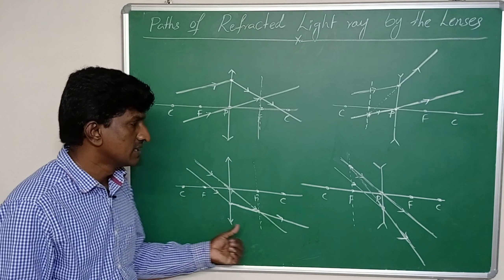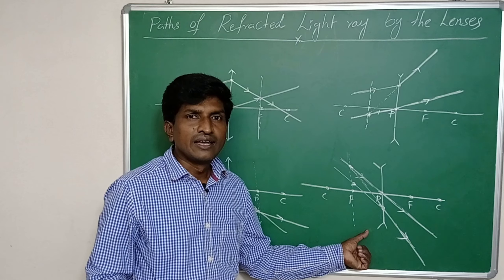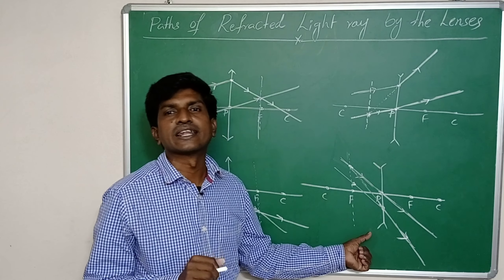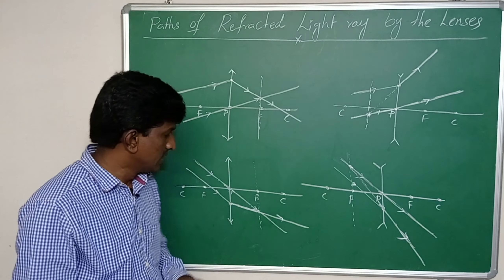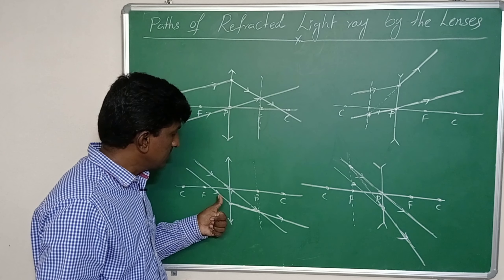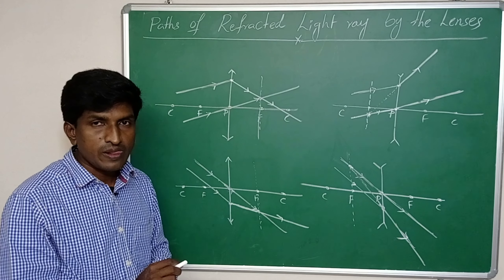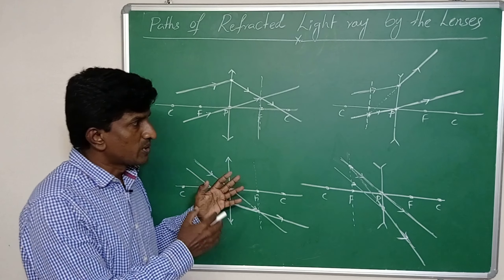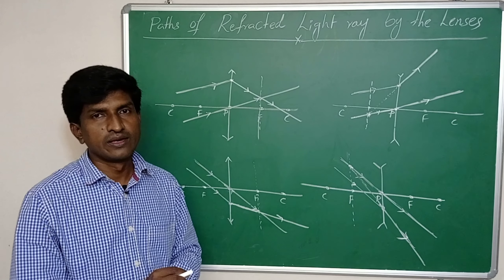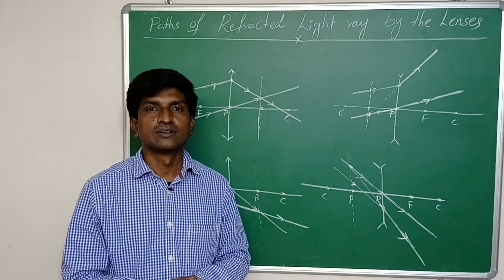This is about the refracted paths of light rays by convex lenses as well as concave lenses. You can draw the refracted paths for any incident light ray if you know the focal plane and the light ray passing from the optical center. Just practice with more light rays and you will get a better idea. Thank you.